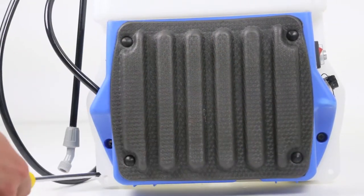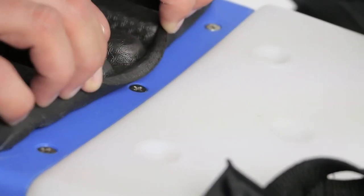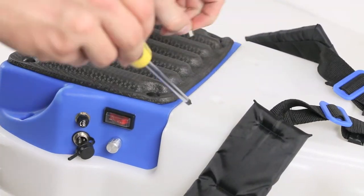Three along the top, two on the sides, and one on the bottom of the unit. The top three are concealed behind the back padding. Gently pull back to gain access to the screws.